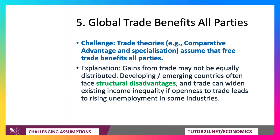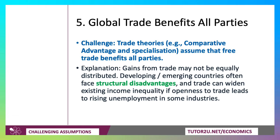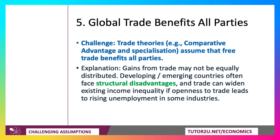Our fifth one is that global trade benefits all parties. The assumption behind comparative advantage theory is that if you find where your advantage is and you specialise, under certain assumptions, free trade benefits all parties. You can draw the theory in the diagrams and get the answer there. However, challenge the assumption.